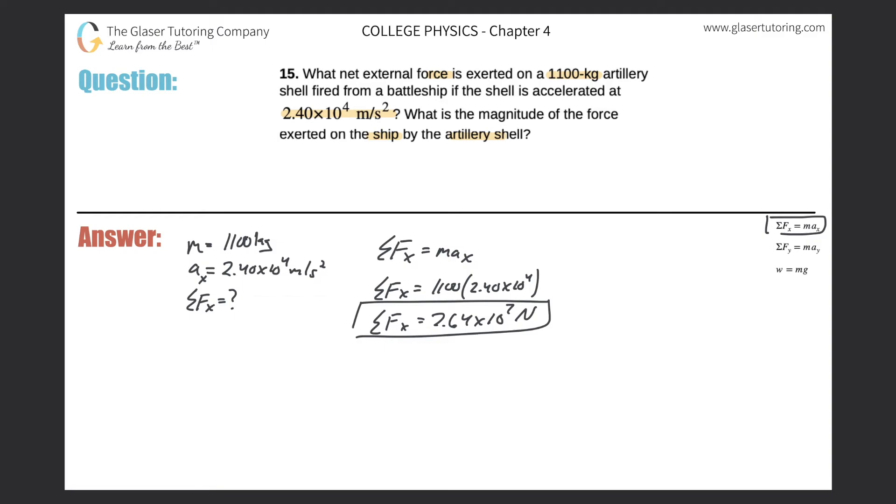If the artillery shell is fired from a battleship and it has a force of positive 2.64 times 10 to the 7 Newtons, then the opposite force would be the magnitude of the force exerted on the ship by the artillery shell. That should simply be just negative 2.64 times 10 to the 7th Newtons.